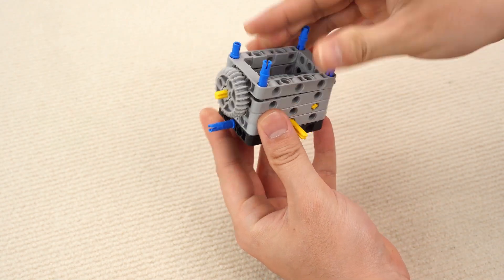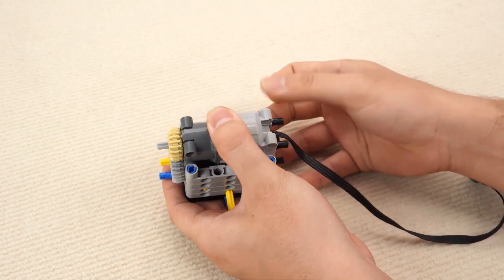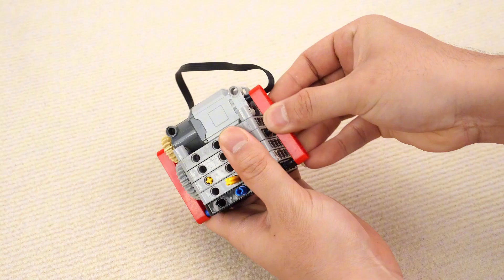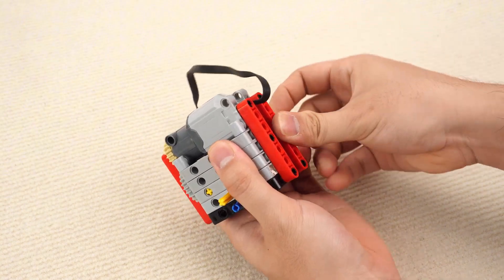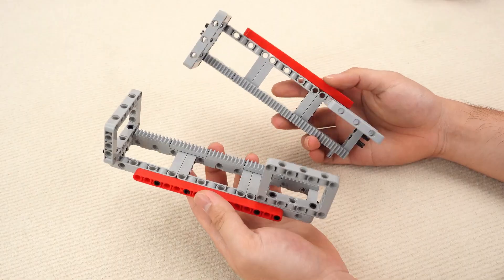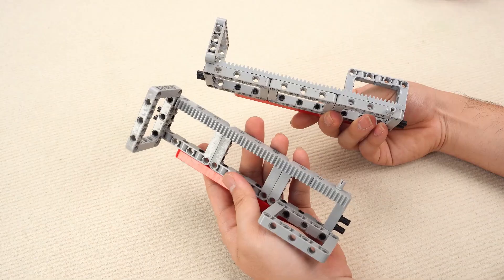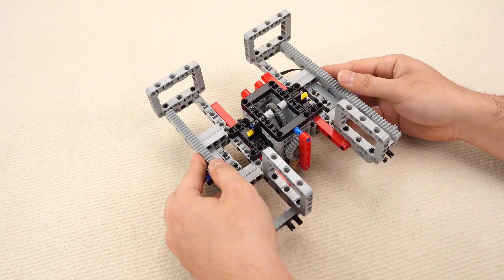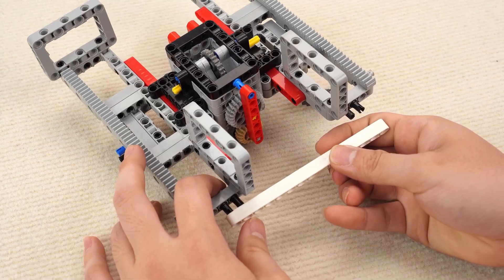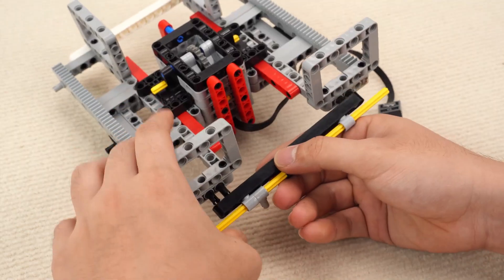Moving on to the second lifter, the scissor lift. First, the motor. Add some stabilizing bars. And here's the rack gear. Attach it to the gearbox with the motor. Secure both ends to keep it balanced.